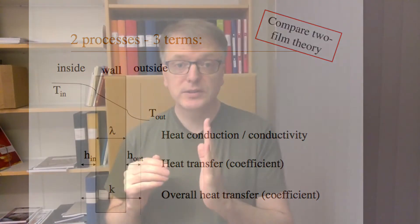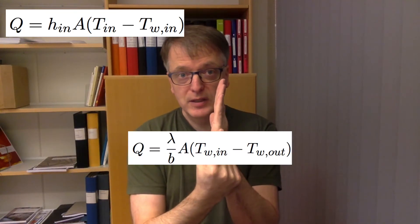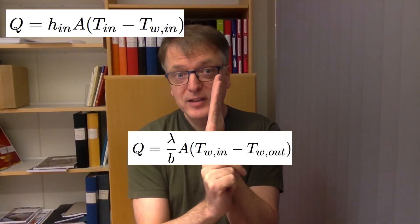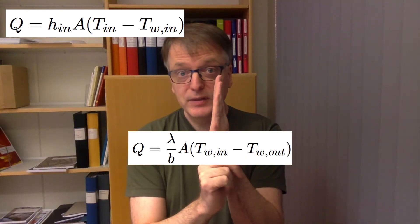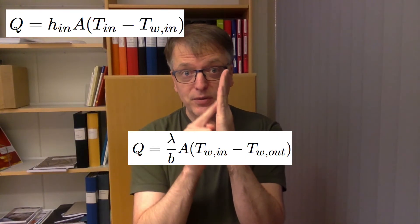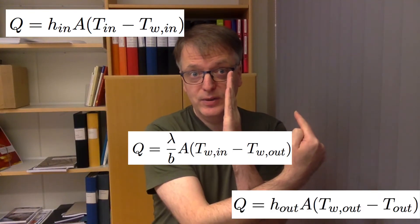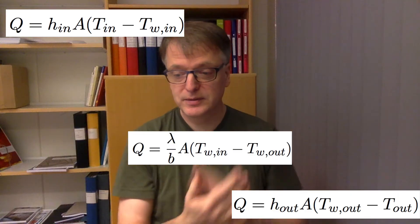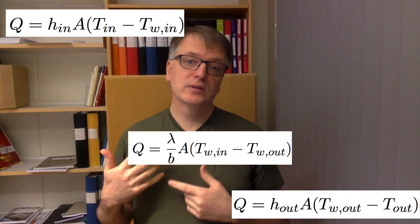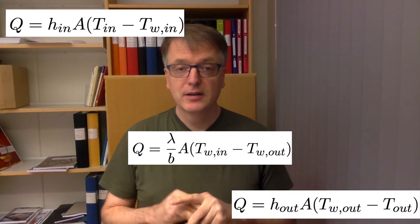We can set up equations for each region. From bulk air to the wall surface: Q equals the heat transfer coefficient times the temperature difference. Inside the wall: Q equals conductivity divided by thickness times the temperature difference across the wall — the thicker the wall, the harder it is for heat to pass through. On the other side: Q equals the heat transfer coefficient again times the temperature difference. Multiplying by area gives the full expressions.